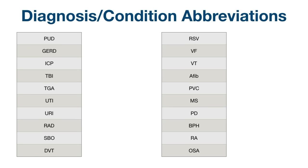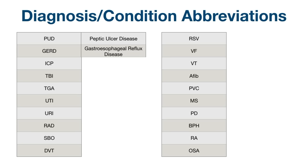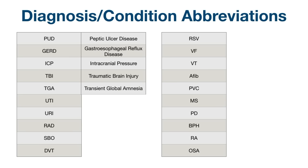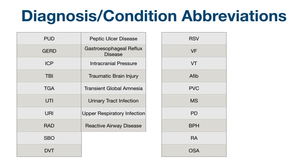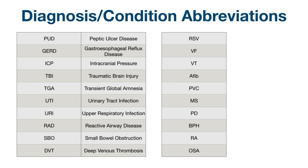Let's continue with more diagnoses and conditions. PUD: peptic ulcer disease. GERD: gastroesophageal reflux disease. ICP: intracranial pressure. TBI: traumatic brain injury. TGA: transient global amnesia. UTI: urinary tract infection. URI: upper respiratory infection. RAD: reactive airway disease. SBO: small bowel obstruction. DVT: deep venous thrombosis.